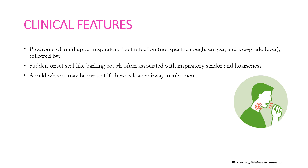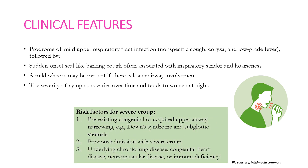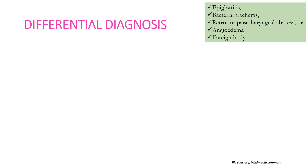When wheeze is present, the condition may be referred to as WALI — wheeze-associated lower respiratory infection. The severity of symptoms varies over time and tends to worsen at night. Risk factors for severe croup include pre-existing congenital or acquired upper airway narrowing (e.g., Down syndrome, subglottic stenosis), any previous admission with severe croup, and underlying chronic lung disease, congenital heart disease, neuromuscular disease, or immunodeficiency.